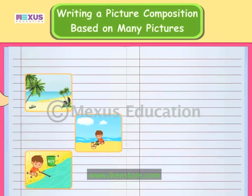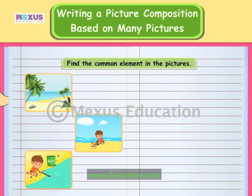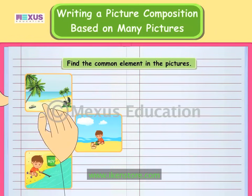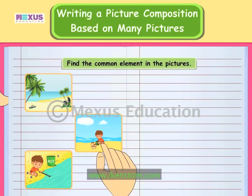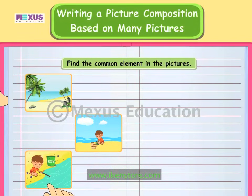There are three pictures given here. Zizi has to write a paragraph on these pictures. First, we need to find the common element amongst the three pictures. In the first picture, we can see a lovely beach with some coconut trees. In the second picture, we can see a boy building a sand castle on the beach. In the third picture, we can see a boy playing in the water on the beach. It is clear that the beach is the common element in all three pictures.